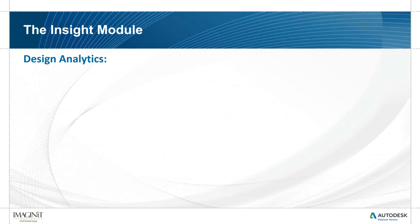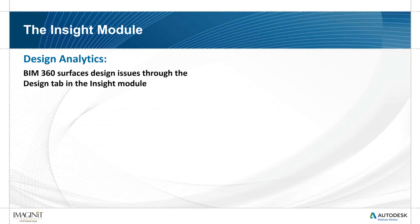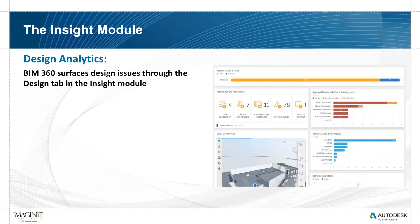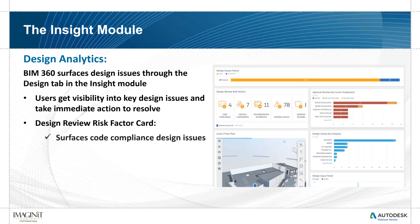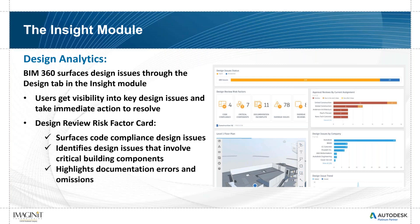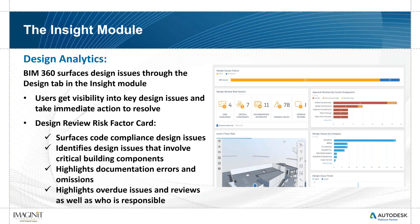There are various tabs within Insight. The first is design analytics. During the design process, if you're using BIM 360 Design, you can keep an eye on packages being distributed, document deficiencies, missing information, and specs. Users get visibility into key design issues and can take immediate action. Design risk factor cards show things like overdue issues, documentation incomplete — for instance, 11 documentation incomplete issues, seven critical components, four code compliance issues, and overdue issues.